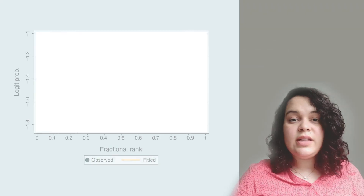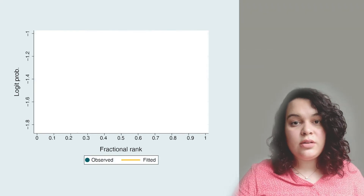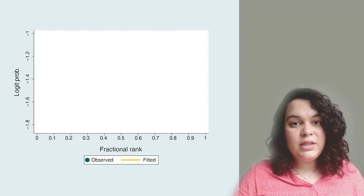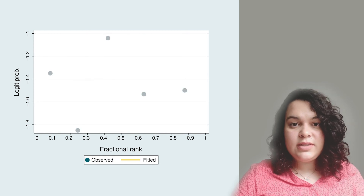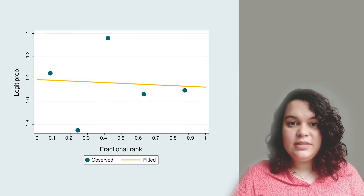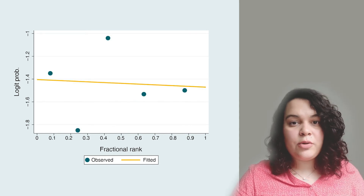Another relevant issue is that the prediction might not be linear, as shown in this example. In that case, the use of SII is not recommended.